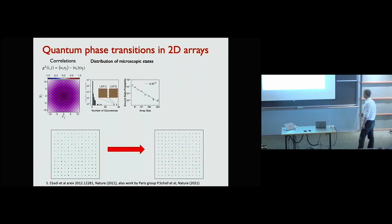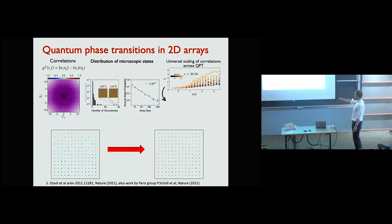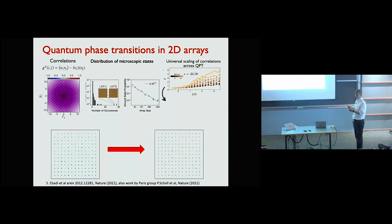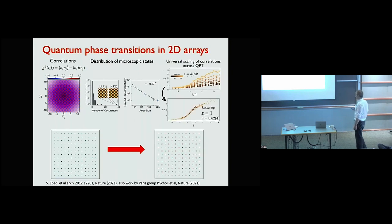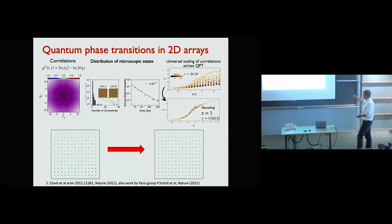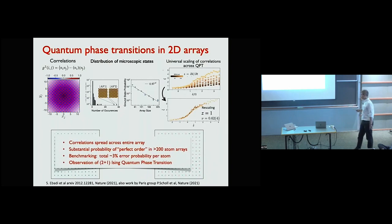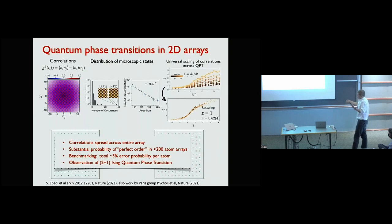To verify that quantum effects are present, we drive the system across the phase transition with different speeds and watch how correlations grow. This growth should be universal for a second-order phase transition, described by critical exponents. By using scaling collapse we can extract these exponents, which correspond to the quantum Ising phase transition in 2+1 dimensions — different from classical or 1D transitions. This was actually the first time this textbook transition was experimentally observed.